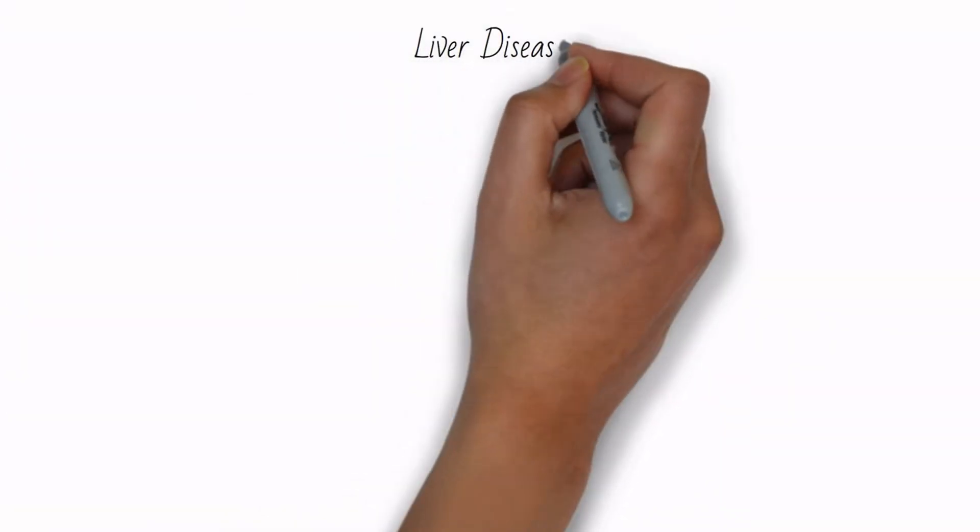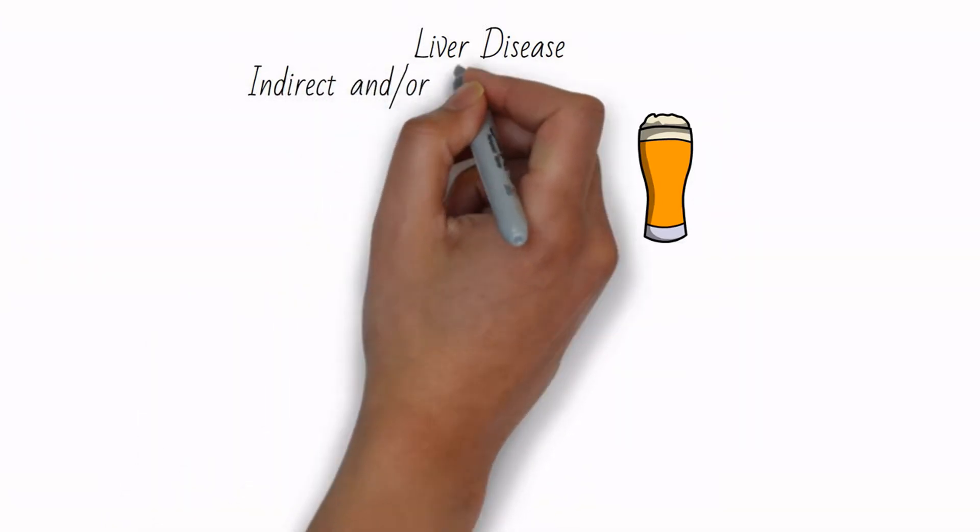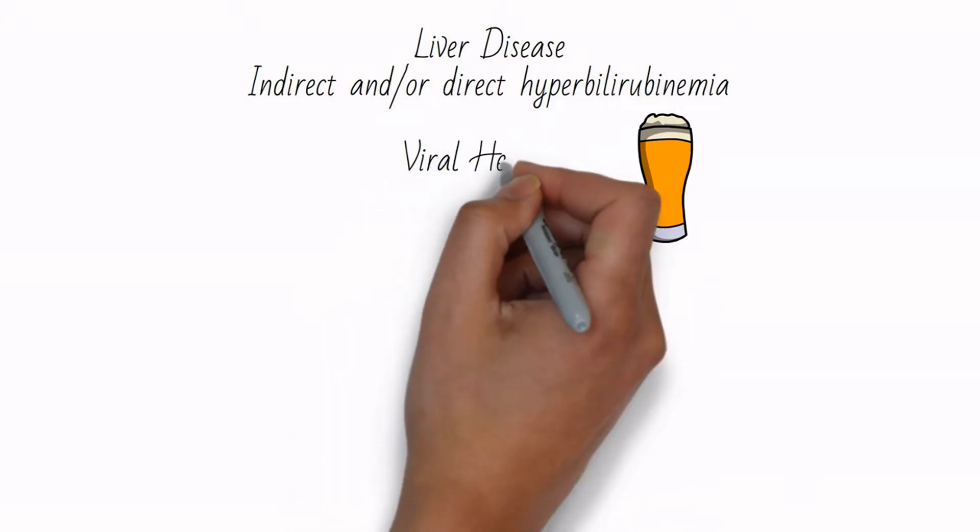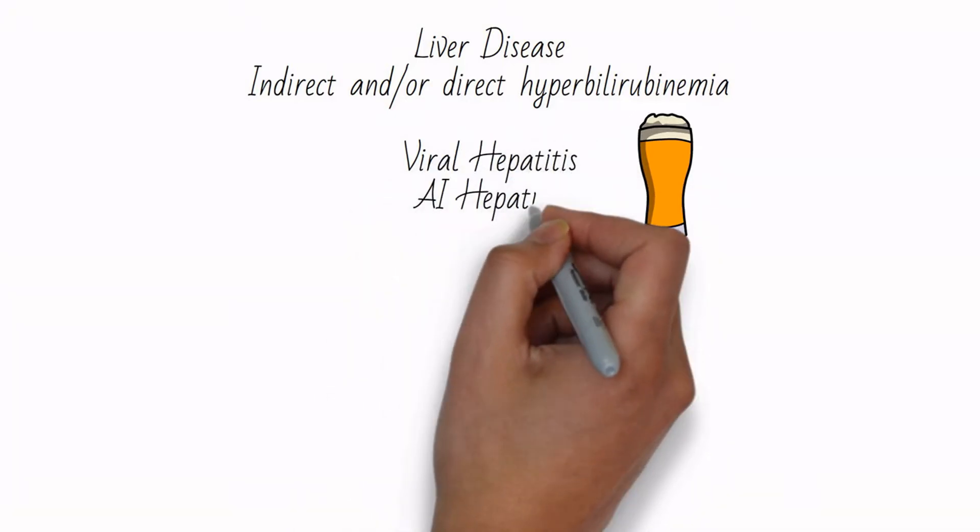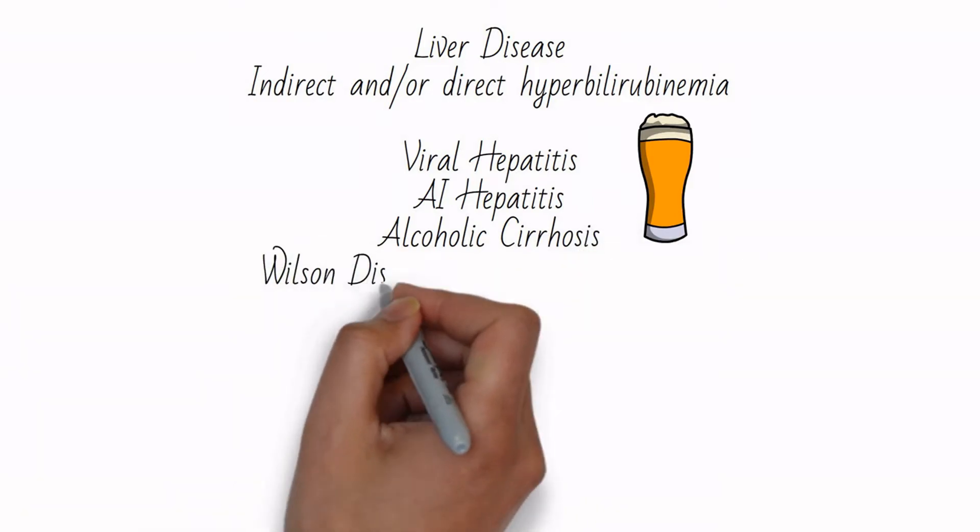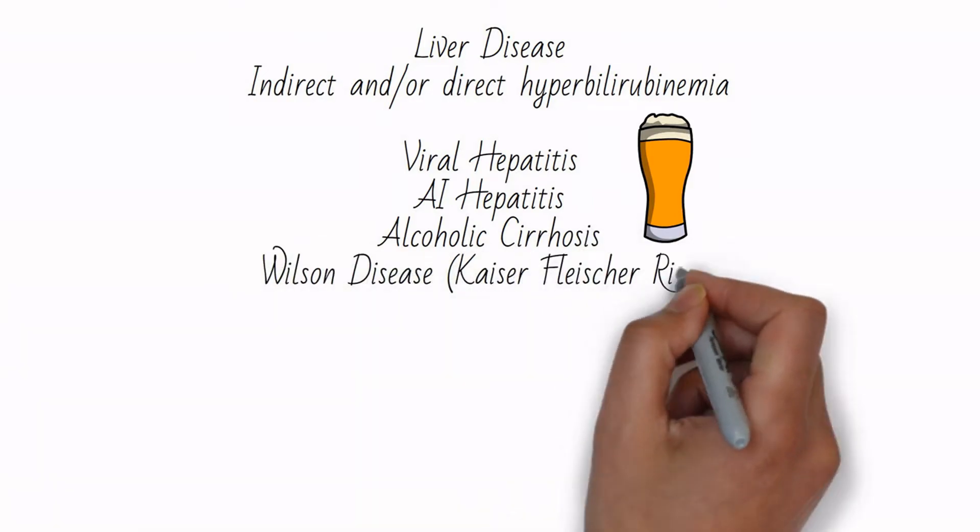Liver disease can lead to indirect, direct, or mixed hyperbilirubinemia and can be caused by viral and autoimmune hepatitis, alcoholic cirrhosis, Wilson disease with characteristic Kayser-Fleischer rings, and many more.